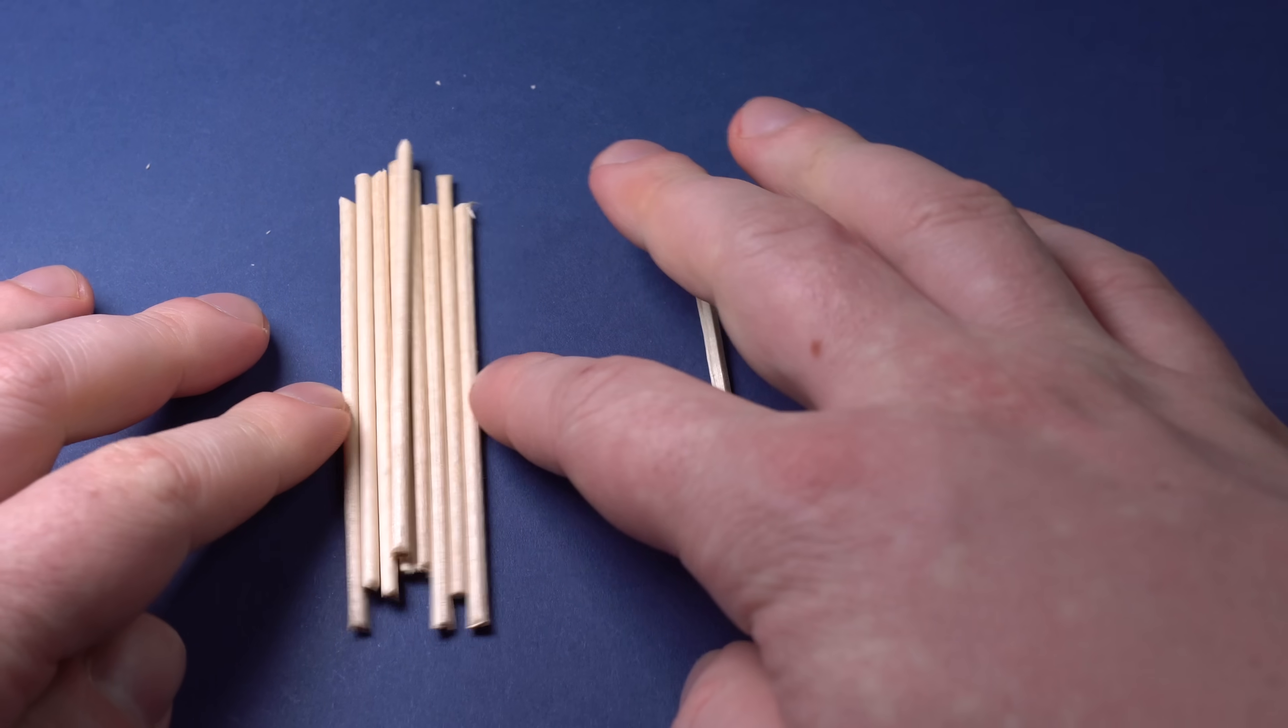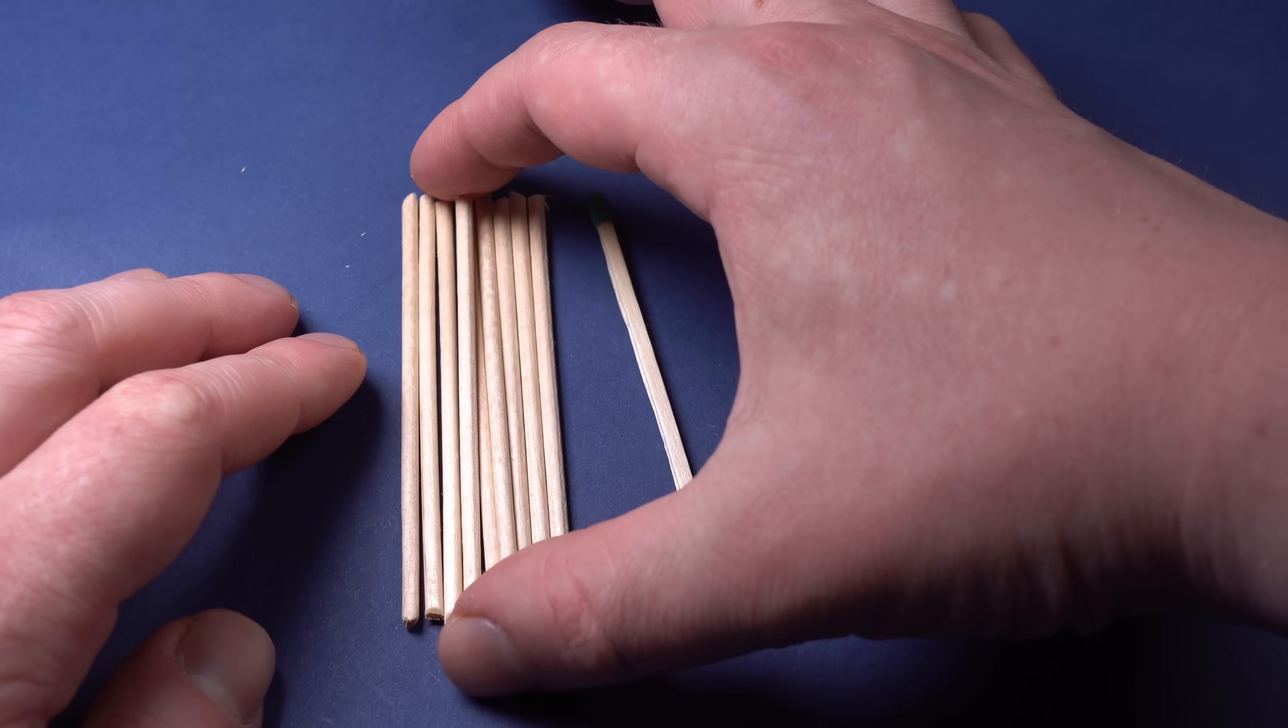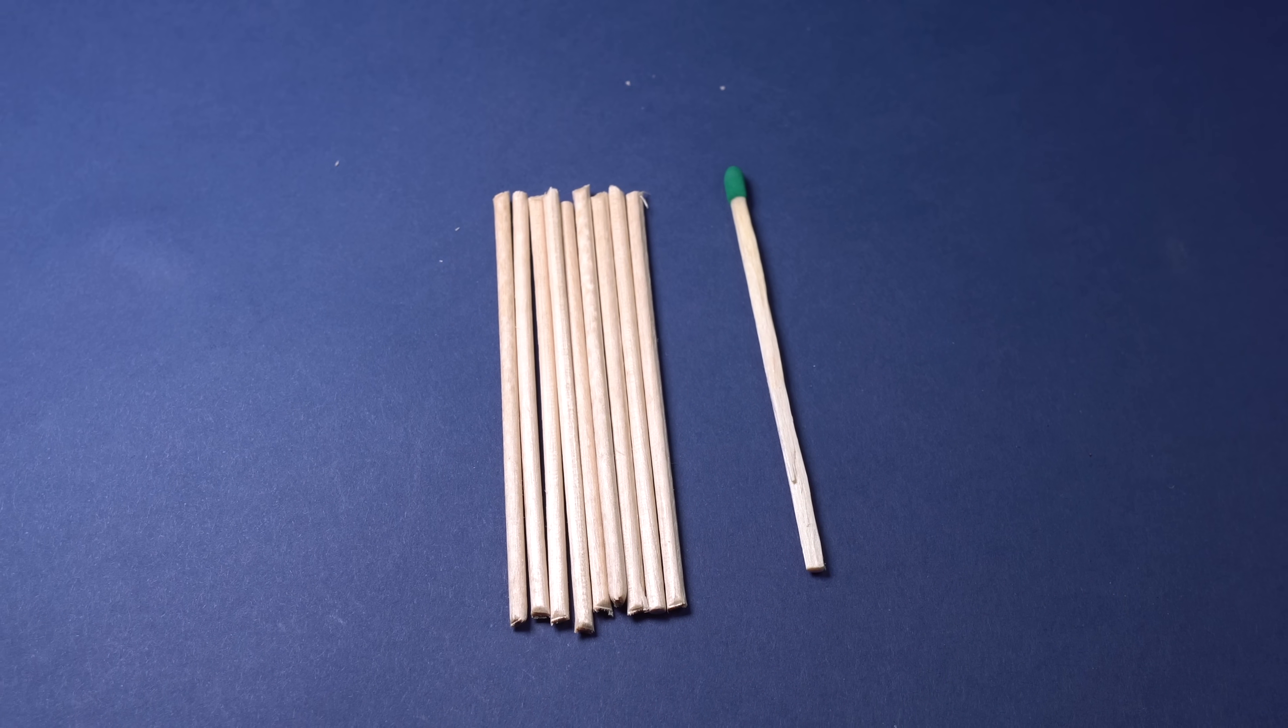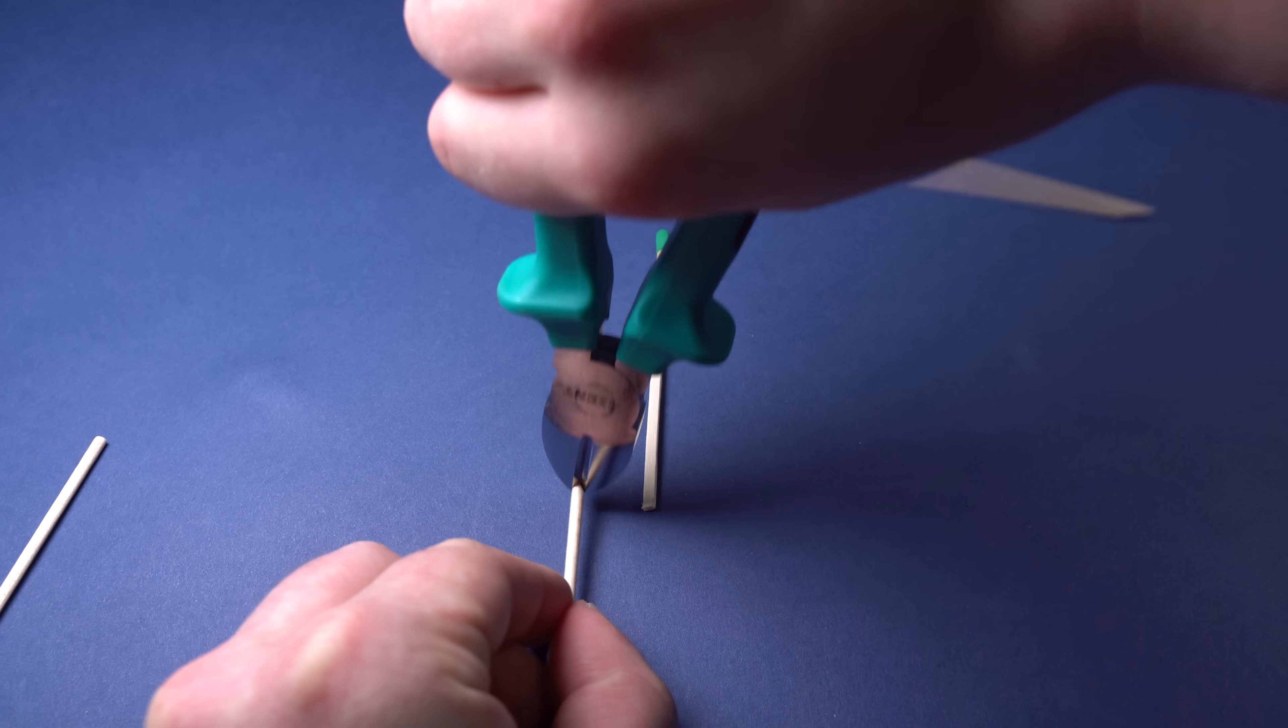Matches making starts with the simplest step which is preparing the wooden sticks which are also called stripes. Such sticks are most frequently made from Aspen, but since I don't have it, I am going to use ordinary birch toothpicks.